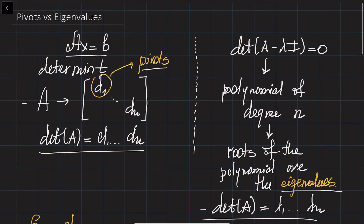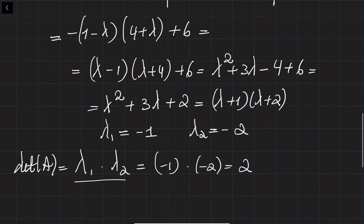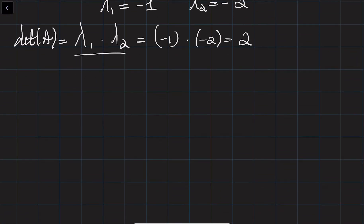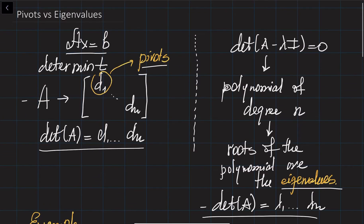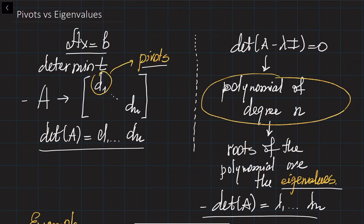We would like to go a little further and know the signs of the eigenvalues. For certain applications, it is important to have positive eigenvalues. Finding the eigenvalues is always difficult because we need to solve a polynomial of degree n, and there is no analytical way to do this in general.